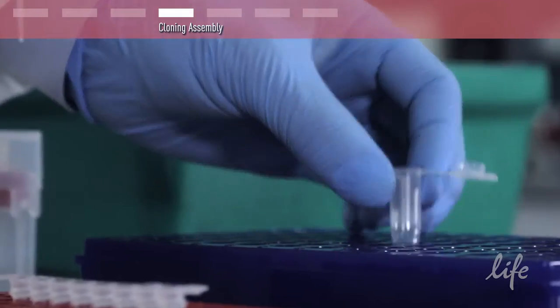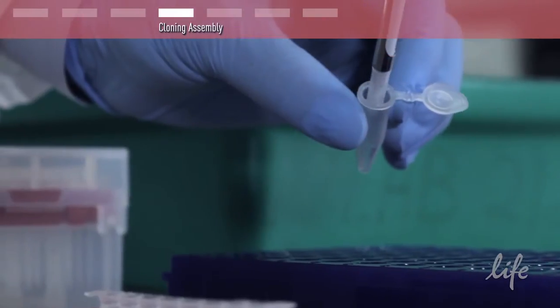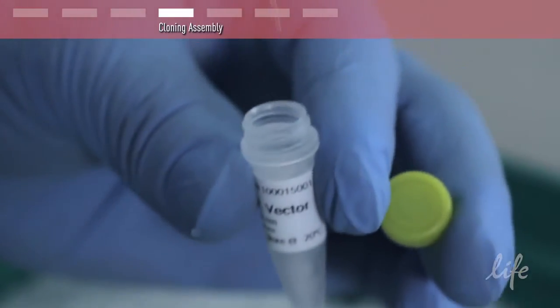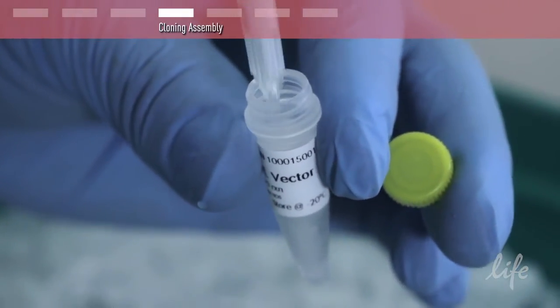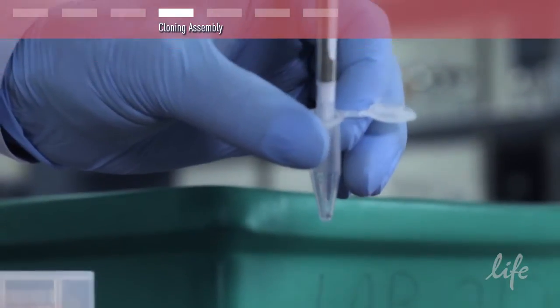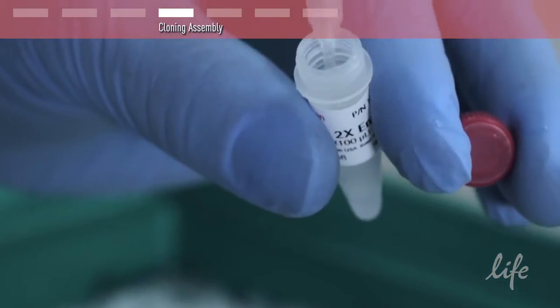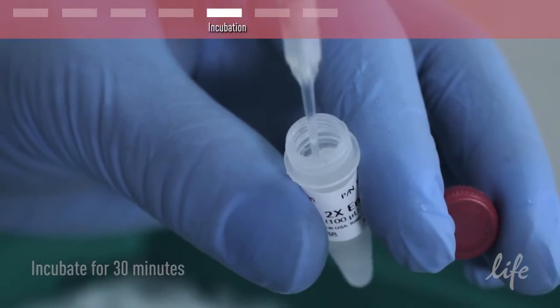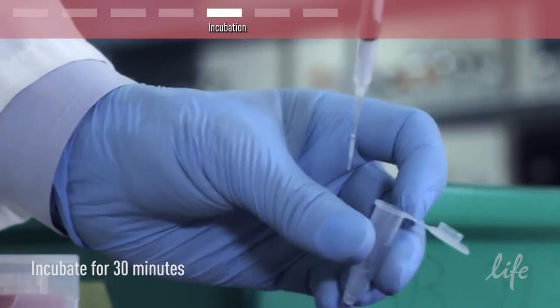Next add your PCR amplified fragments and linear vector to the tube. Now add the assembly enzyme and incubate at room temperature for 30 minutes.